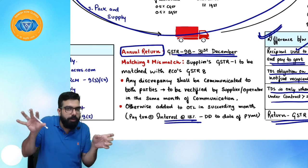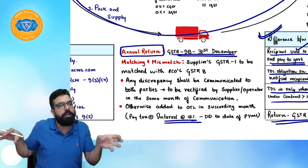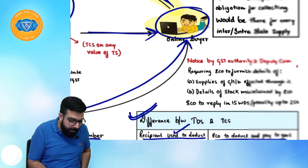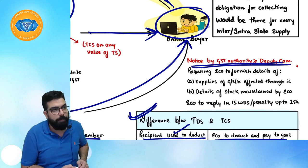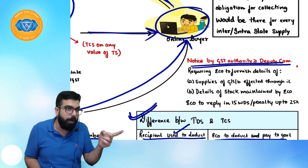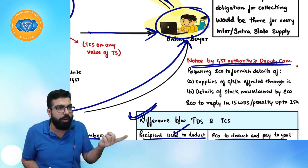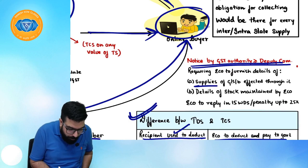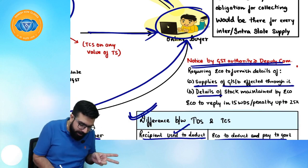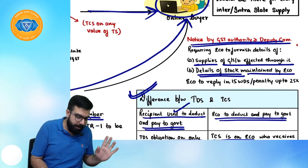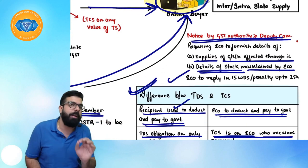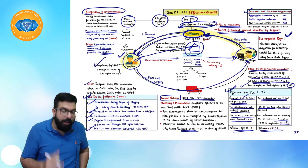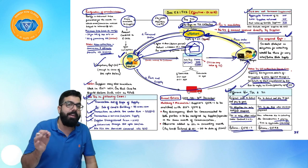If an officer of rank Deputy Commissioner or above wants information about the e-commerce operator, they can issue a notice asking for details of supplies of goods or services made through the platform and details of stock maintained by the operator. The e-commerce operator must reply within 15 working days; otherwise a penalty of ₹25,000 is applicable.